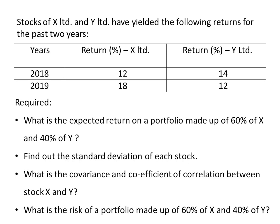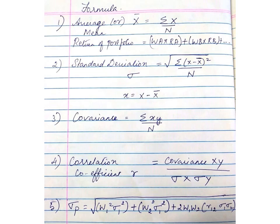Before we move ahead, take out a piece of paper and a pen and work on the problem along with me. Let's take down the formulas. The first formula is to calculate the return of an individual security — the average return: X̄ = Σ X / N.